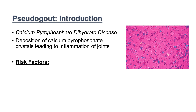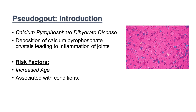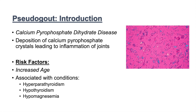There are specific risk factors for pseudogout. The main risk factor is increased age — it typically only affects older individuals, 60 years or older. Pseudogout is also associated with certain conditions, including hyperparathyroidism, hypothyroidism, hypomagnesemia, and hypophosphatasia. Pseudogout differs from gout in that gout involves urate crystals, whereas pseudogout involves calcium pyrophosphate dihydrate crystals.